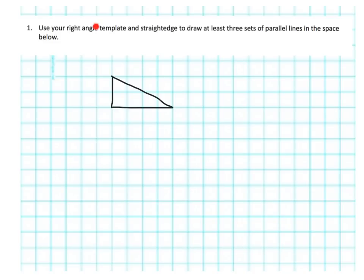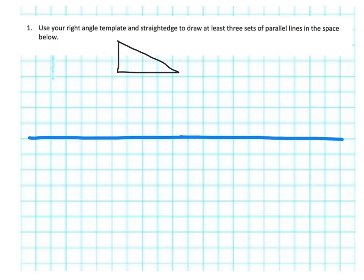On this slide we're being asked to use our right angle template and straight edge. I don't have a straight edge on my computer here so I'm going to have to do a little bit of faking it. We're going to use this right angle template to create three parallel lines down here on this grid. First thing I'm going to do is draw a straight line.